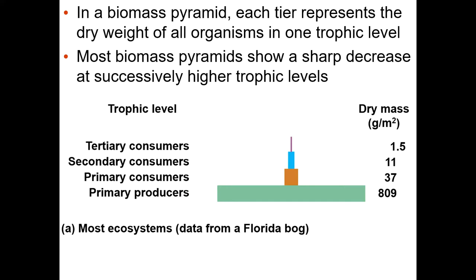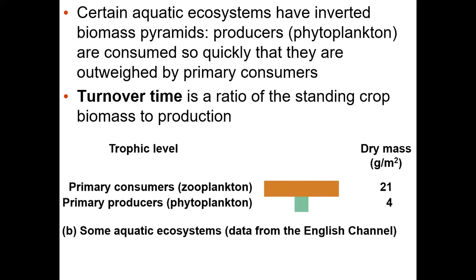Biomass pyramids are very similar, and they look at dry mass as opposed to energy, but you get the same kinds of numbers — going from one level to an order of magnitude smaller, and so on. Sometimes there are inverted biomass pyramids because the producers are consumed so quickly with a really fast turnover rate, but you probably won't see these.